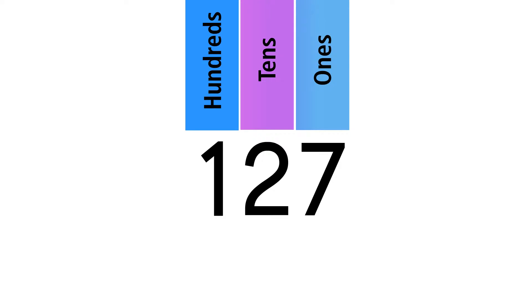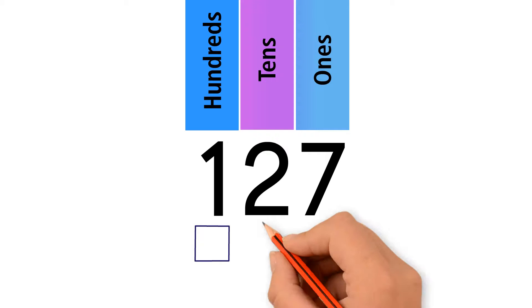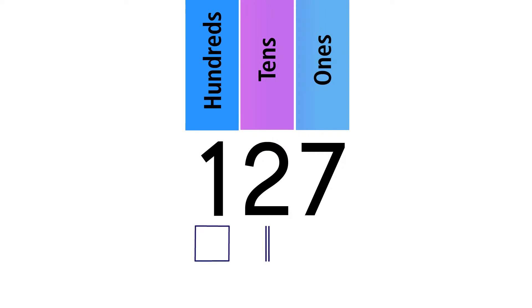Let's say we have the number 127. We have a 1 in the hundreds place, so we draw 1 square. 1 square represents 100. We have 2 in the tens place, so we draw 2 bars.